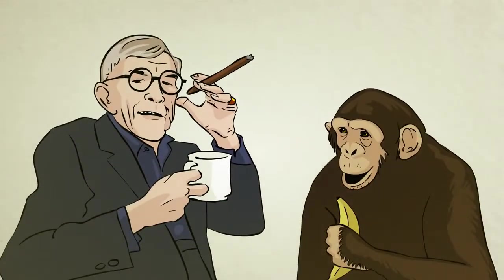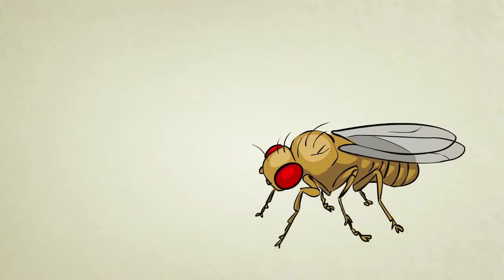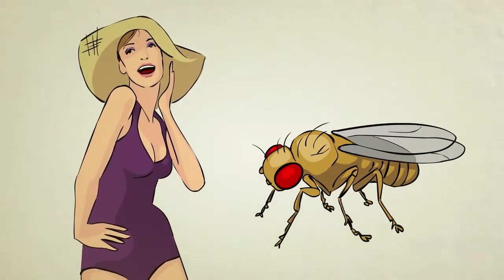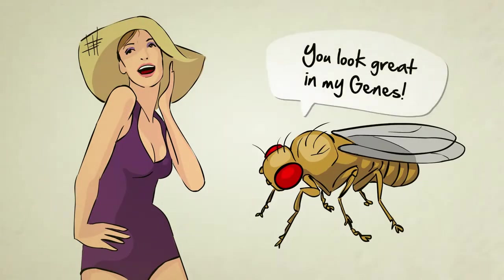You might not be too surprised to learn that humans and chimps, which are closely related, share 96% of their genetic code. But what would you think a lowly fruit fly has in common with a beautiful swimsuit model? Surprisingly, about half of its genes.